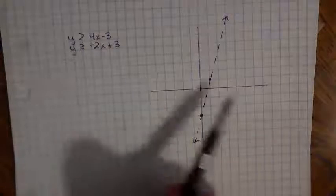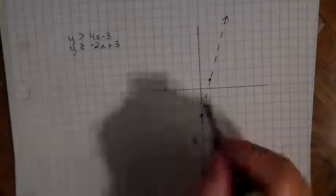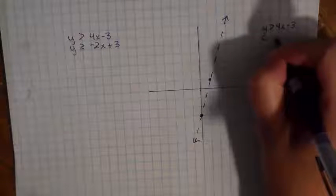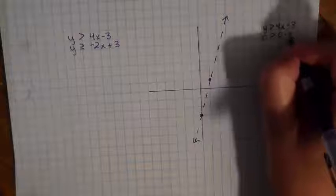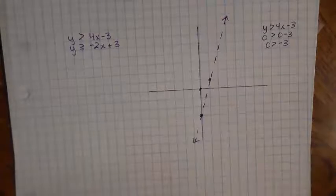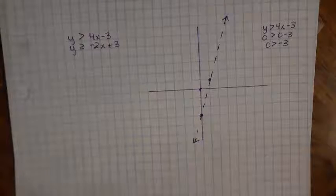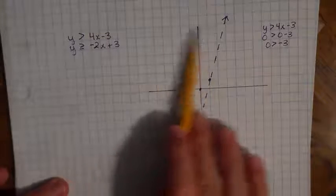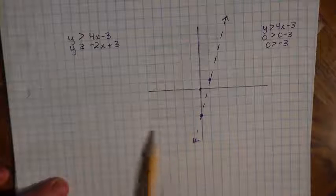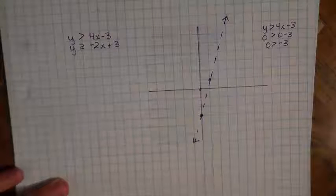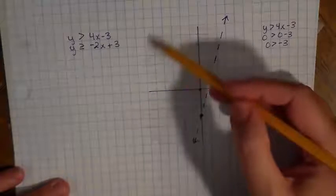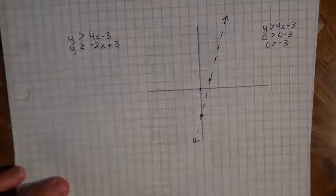I need to determine which side of this line to shade. I'll pick the point (0, 0) and plug it in: 0 is greater than 0 minus 3, or 0 is greater than negative 3. That is true, so I need to shade this side of the line. I'll come in with a pencil and shade very lightly.